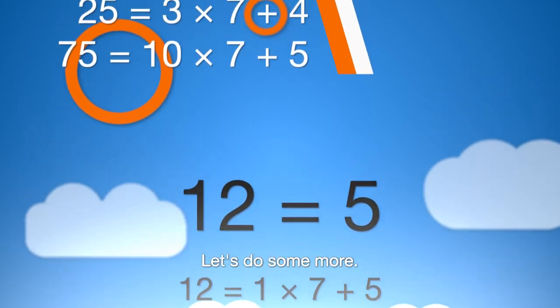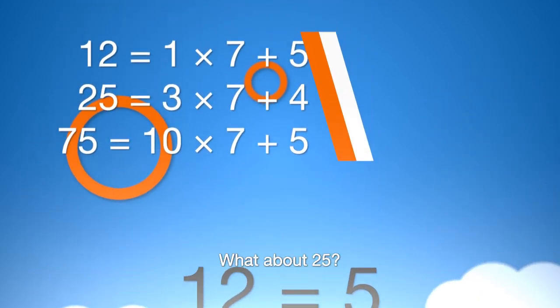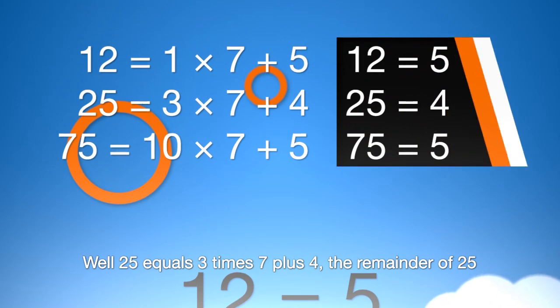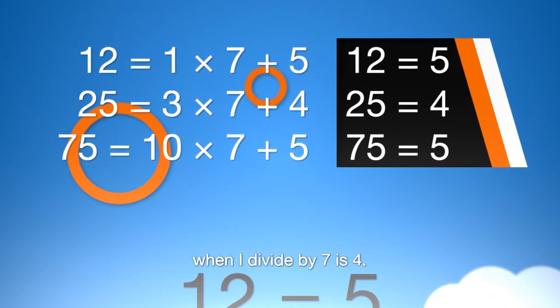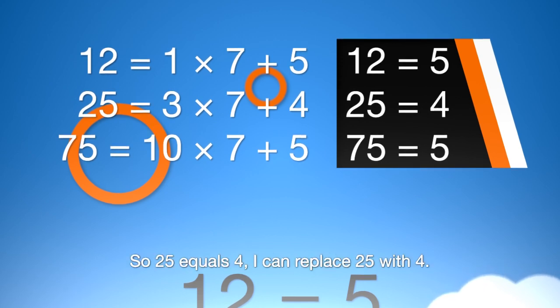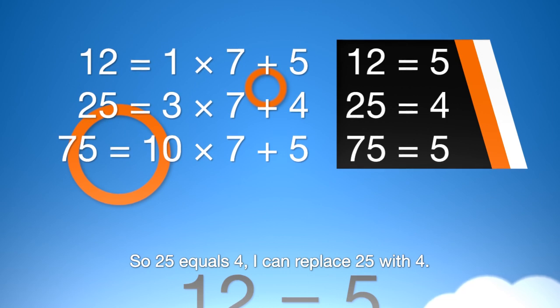Let's do some more. What about 25? Well, 25 equals 3 times 7 plus 4. The remainder of 25 when I divide by 7 is 4. So 25 equals 4. I can replace 25 with 4.